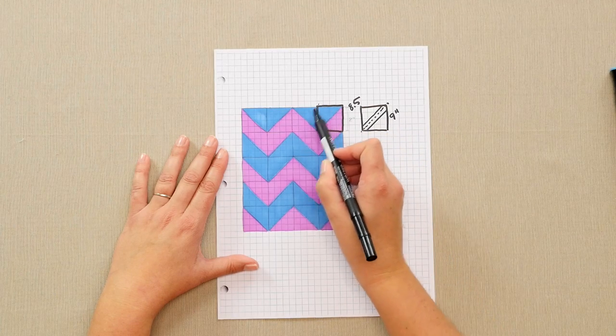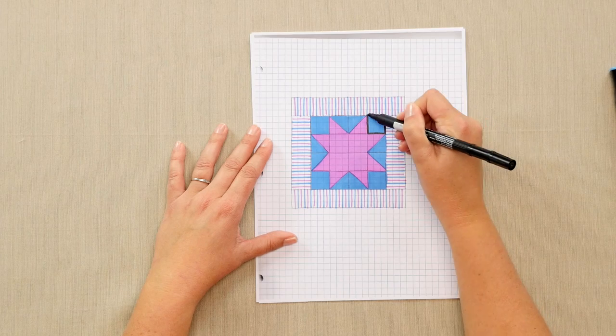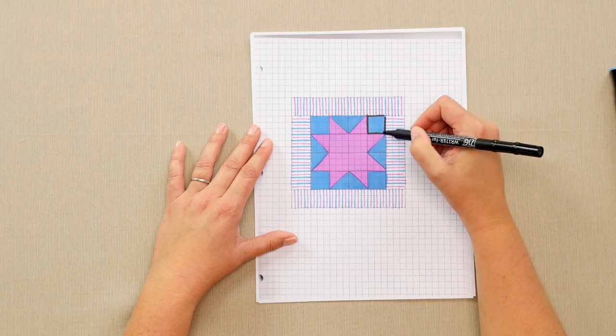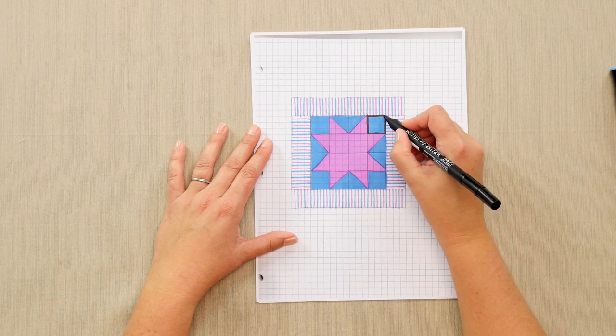Each one of my blocks will have a quarter inch seam allowance between each of them. Here's a block where I've added borders to the block. Each of these squares, if they're one inch, will become a three inch by three inch finished block.